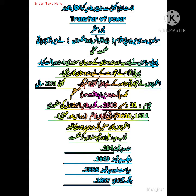در حقیقت یہ لوگ تجارتی غرض سے آئے تھے لیکن ہندوستان کی اندرونی سیاست کا جائزہ لیتے ہوئے اور حالات کو دیکھتے ہوئے رفتہ رفتہ ہندوستان پر قبضہ کرنے کے خواب دیکھنا شروع کر دیے۔ نہ صرف خواب دیکھے بلکہ ان کو عملی جامہ پہنانے کے لیے کوششیں بھی شروع کر دیں اور بتدریج ہندوستان پر قبضہ کیا۔ 31 دسمبر 1600 میں East India Company کے نام سے تجارتی ادارہ قائم کیا تھا۔